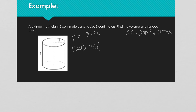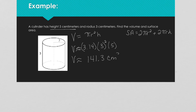Times our radius is 3, and our height is 5. On my calculator: 3.14 times 3 squared times 5, and I get approximately 141.3. Because we're dealing with volume, our units need to be cubed — so approximately 141.3 centimeters cubed.